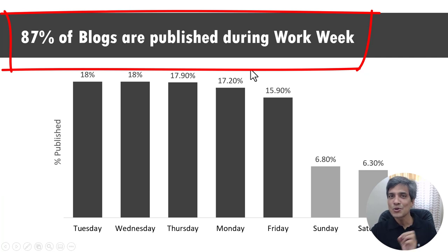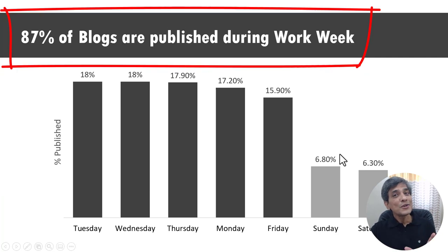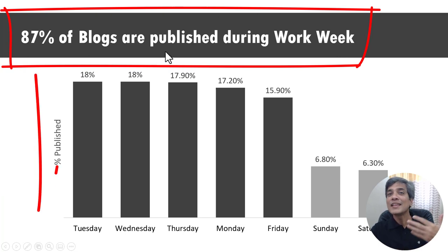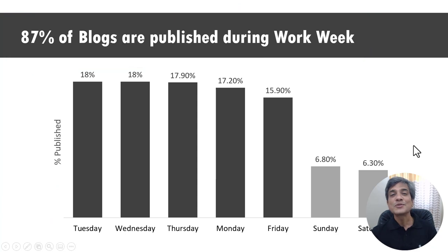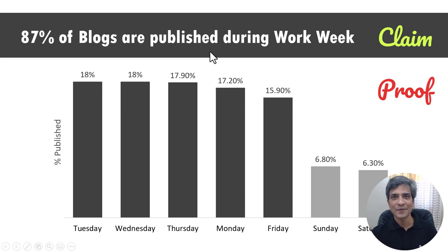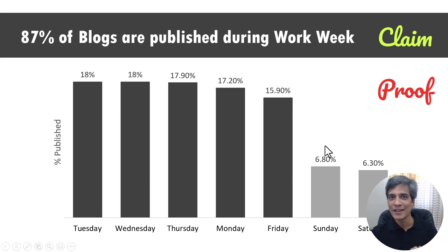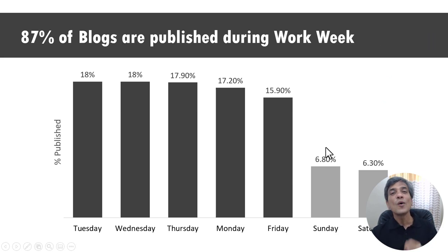Once your audience gets a clear idea of what the slide is all about from the slide title, their eyes naturally move down to look for evidence of what is said in the title. So naturally you will use the slide area to prove the claim you made in the title. The key thing, however, is to show the proof in a way your audience can understand quickly — and that happens when you visualize the numbers as a chart.